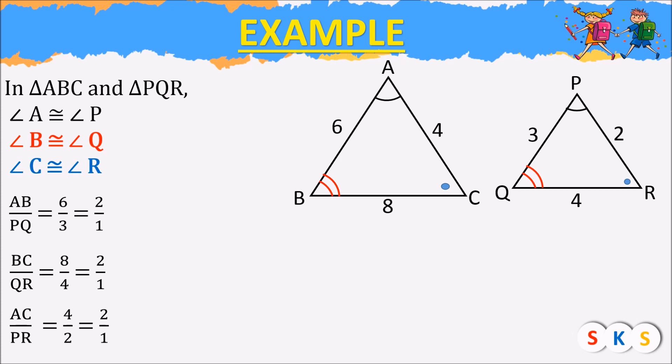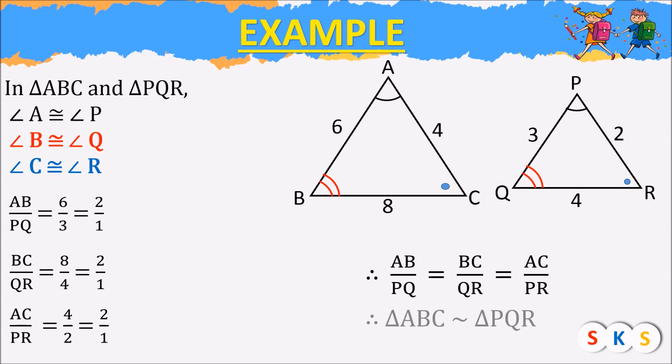So AB upon PQ, BC upon QR, and AC upon PR all have the same value, that is 2 upon 1. Therefore AB upon PQ equals BC upon QR equals AC upon PR. Here we have two triangles whose corresponding angles are congruent and the sides are in proportion, therefore triangle ABC is similar to triangle PQR.